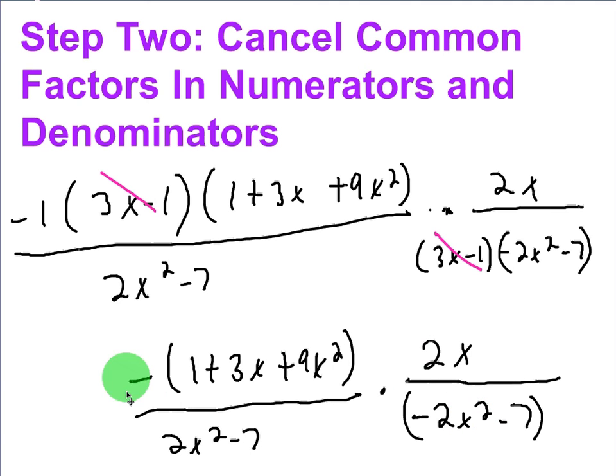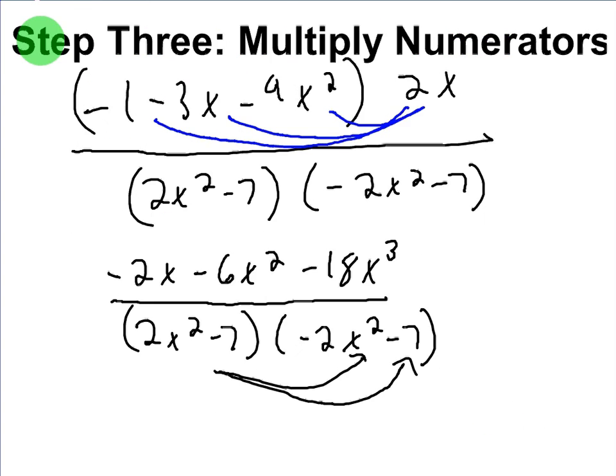So basically, I distribute the negative and the 2x into the top. And the bottom, you'd have to FOIL. First, outer, inner, last. So it would look like this. You don't have to do this if you don't want to. So anyway, the top would become negative 2x minus 6x squared minus 18x cubed.